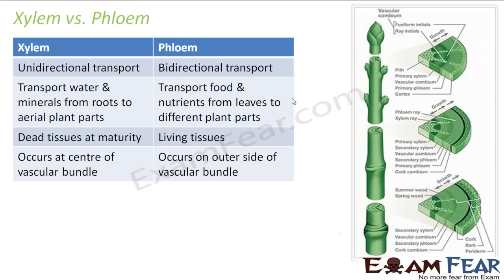So it has to go everywhere basically. Xylem transports water and minerals from roots to the aerial plant parts, whereas phloem transports food and nutrients from leaves to different plant parts. Xylem are mostly dead cells at maturity, while phloem are mostly living tissues except the phloem fibers.